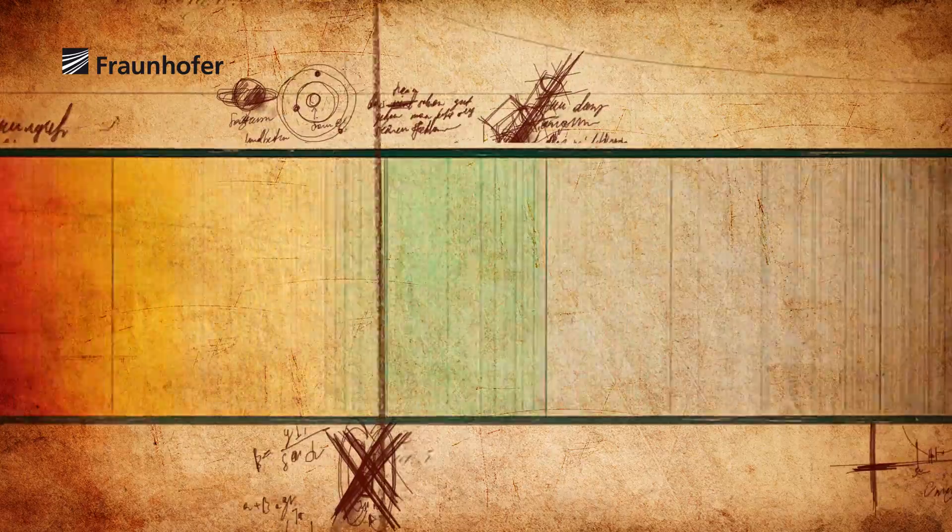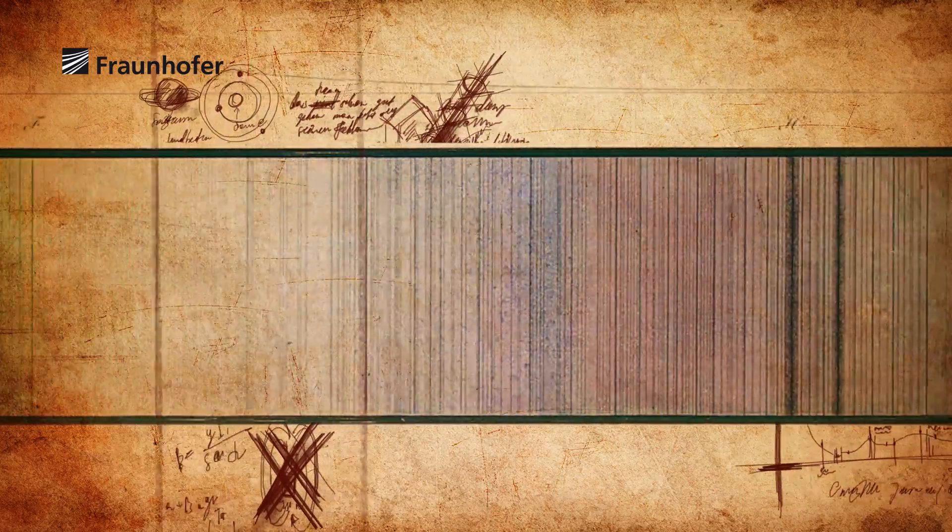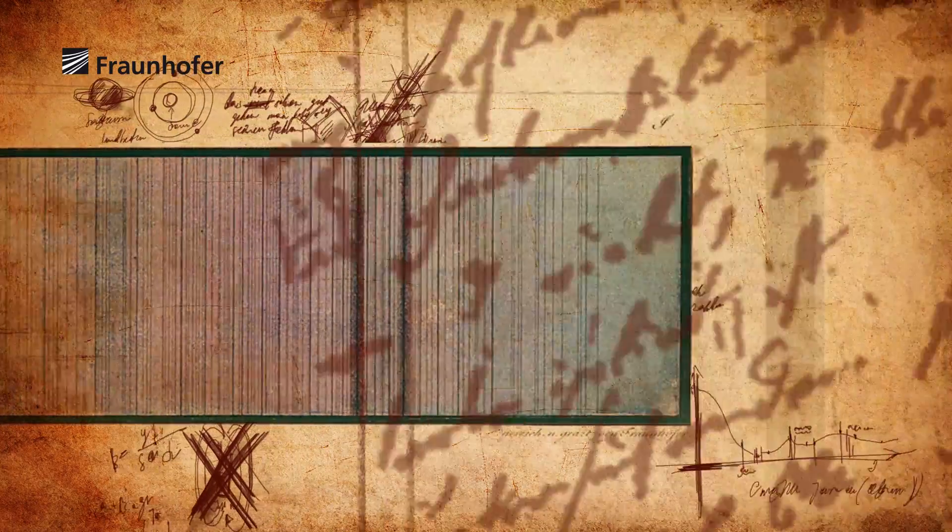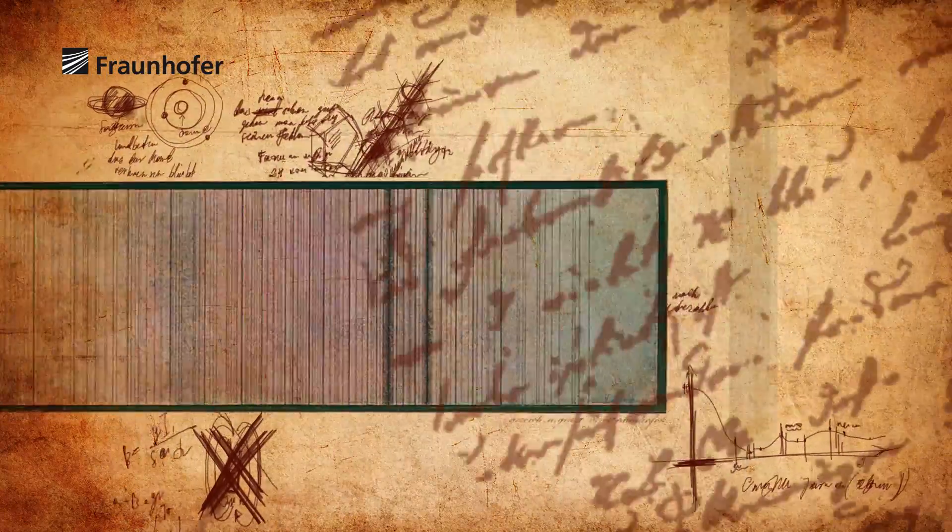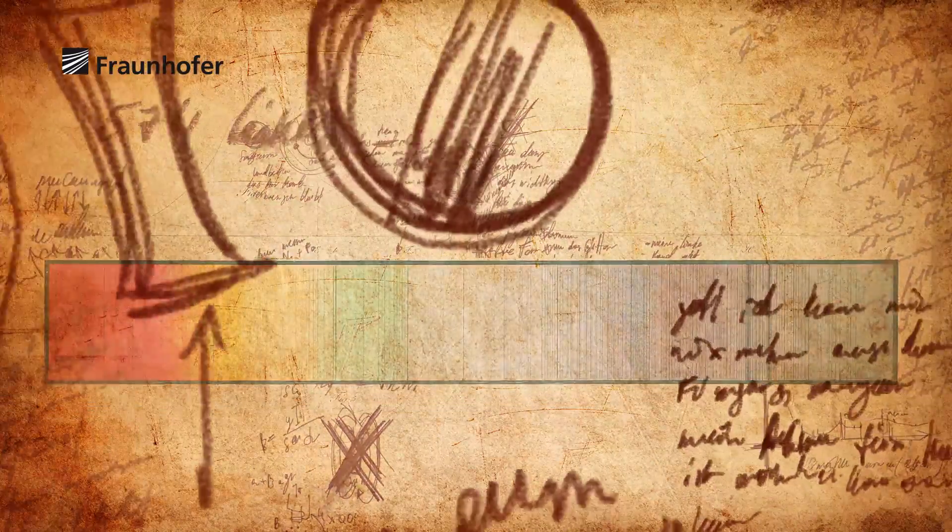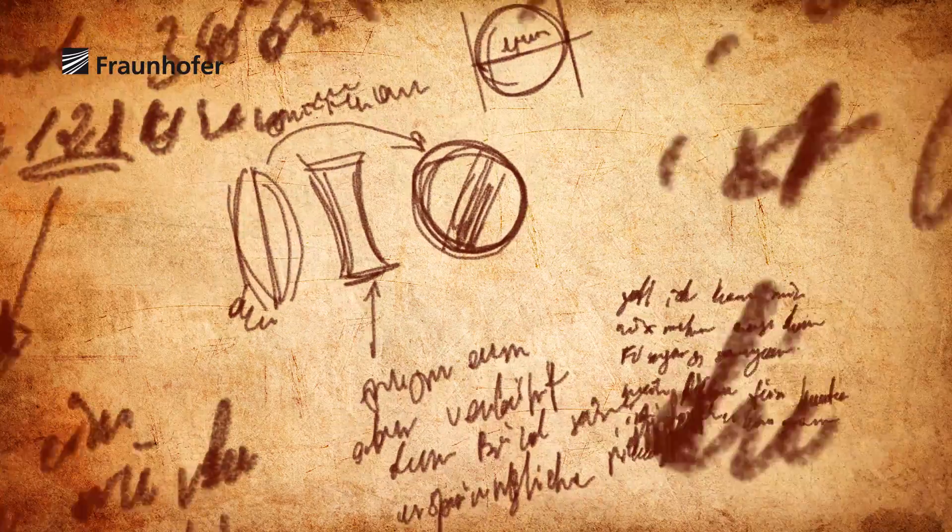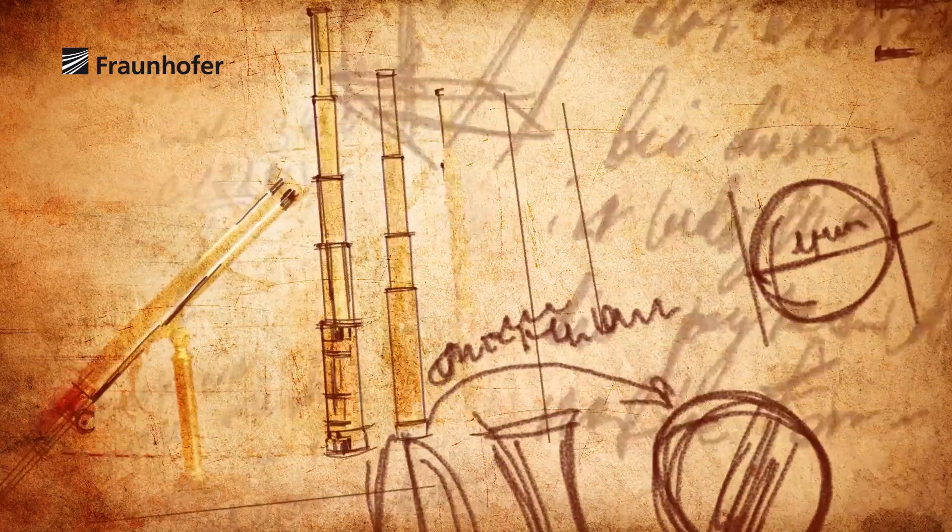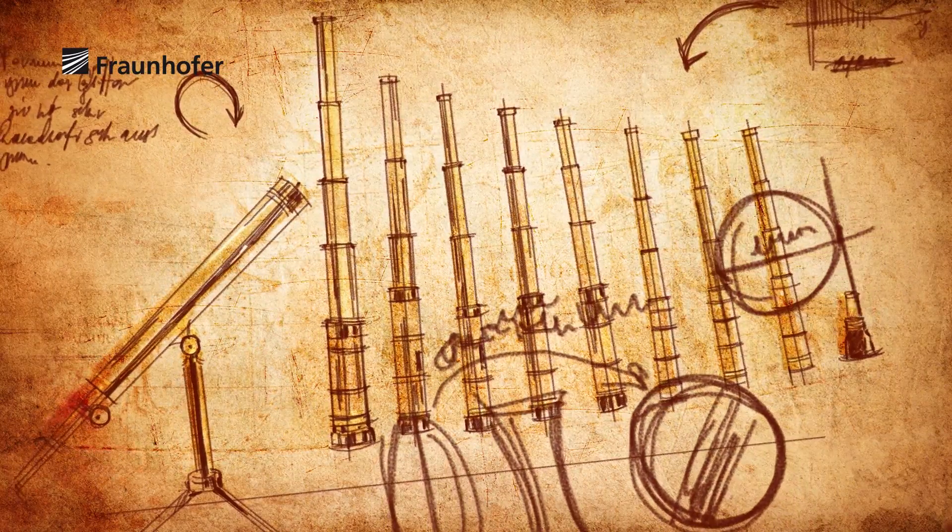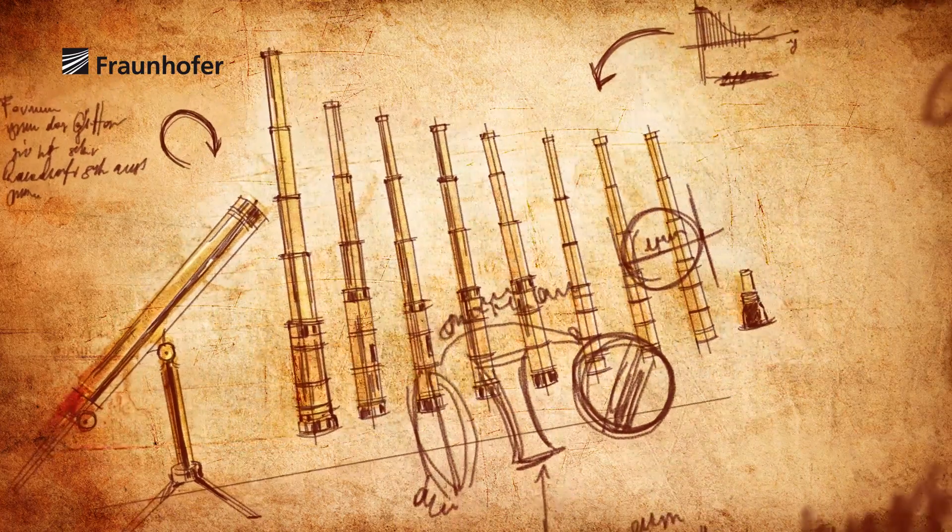With these dark lines, he found fixed reference marks, which he could use to measure the light refraction of different glasses, since they divided the colours clearly from each other. Now he was able to produce high-quality, streak-free raw glass of a consistent quality, from which he made the best lenses.